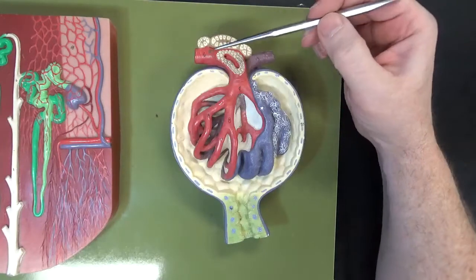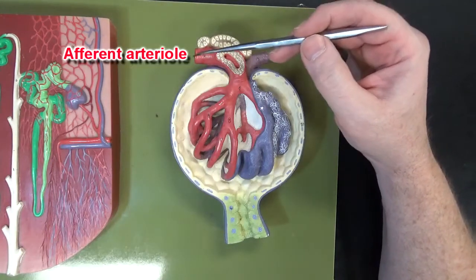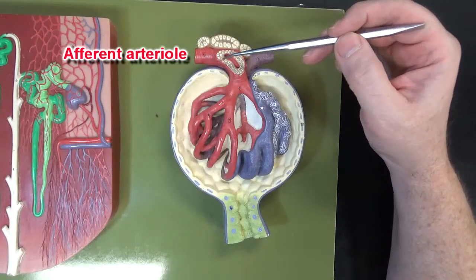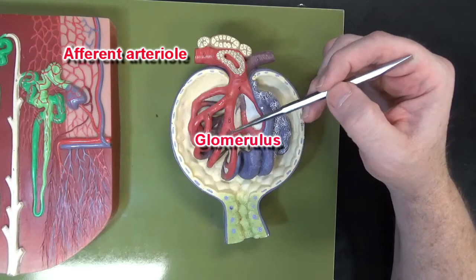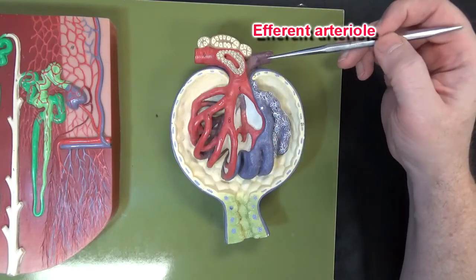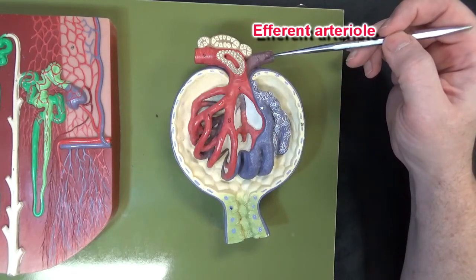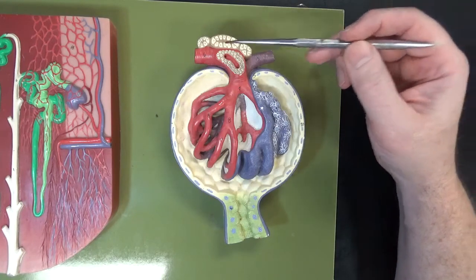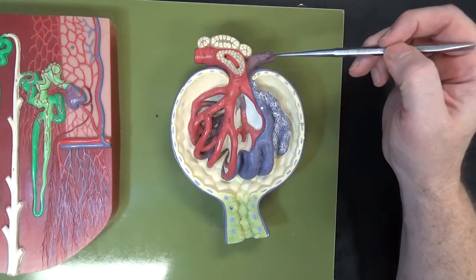This structure right here is the afferent arteriole, bringing blood into the glomerulus. This would be the efferent arteriole, and you'll notice the efferent arteriole is smaller than the afferent arteriole.